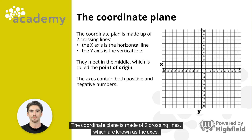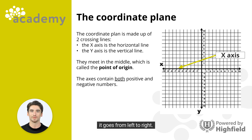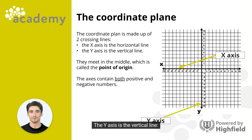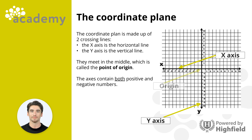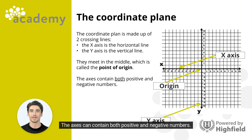The coordinate plane is made of two crossing lines, which are known as the axes. The x-axis is the horizontal line — it goes from left to right. The y-axis is the vertical line — it goes from top to bottom. They meet in the middle, and this is known as the point of origin. The axes can contain both positive and negative numbers.